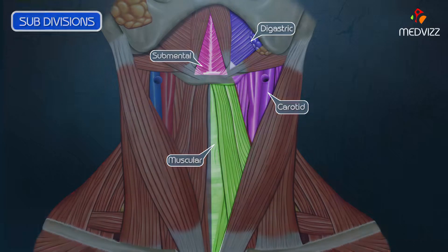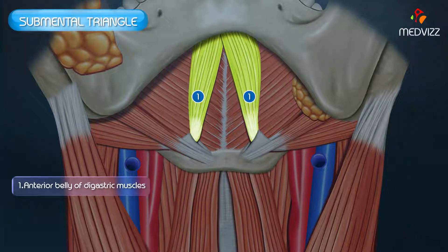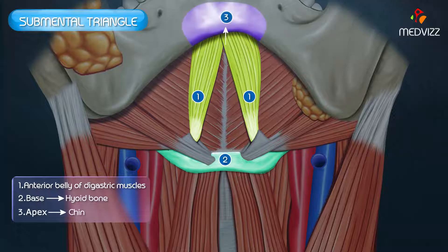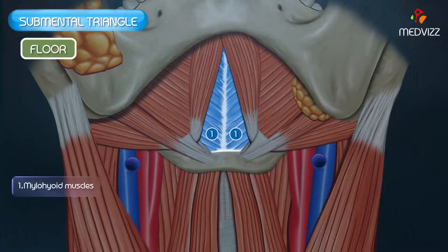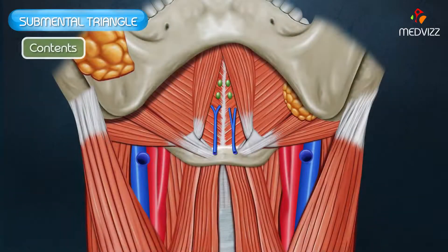The first subdivision is the submental triangle, which is the median triangle. On each side, it is bounded by the anterior belly of the corresponding digastric muscles. Its base is formed by the body of the hyoid bone, its apex lies at the chin, and the floor is formed by the right and left mylohyoid muscles and the median raphe uniting them.